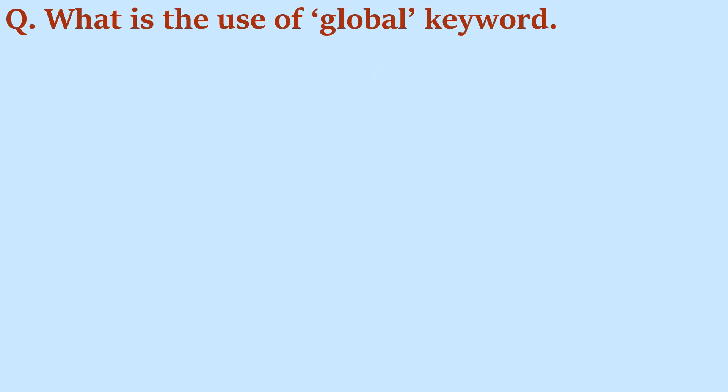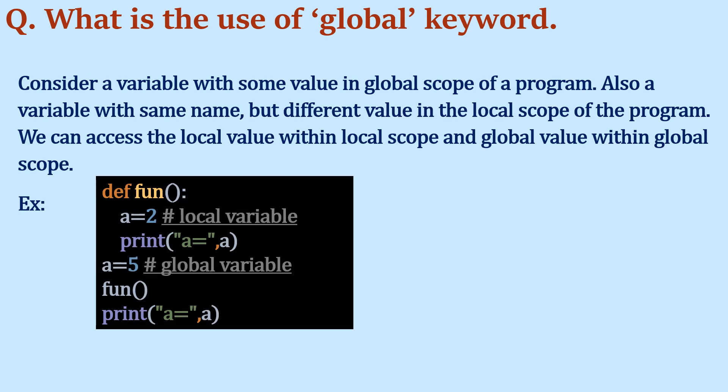What is the use of the global keyword? Consider a function 'fun' where a variable 'a' is defined with value 2 inside it, and outside the function 'a' is assigned value 5. When the function is called and we print 'a', within the function it prints 2 (the local variable). After the function, it accesses the global value of 'a', which is 5, so it prints 5. This shows that a variable with the same name but different values in local and global scope will access the local value within the function and the global value outside it.